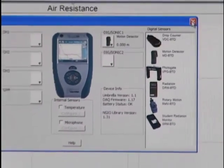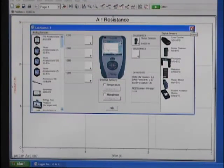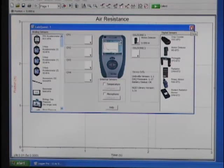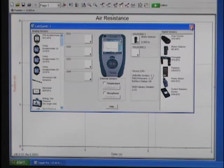After doing this, the motion detector will report the distance of the coffee filters from the floor. And this is something that most students find a little easier to understand than an upside down coordinate system.